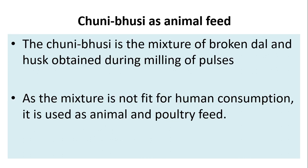Chuni/busi as animal feed: chuni/busi is a mixture of broken dal and husk obtained during milling of pulses. It is not fit for human consumption and is therefore used as animal and poultry feed.